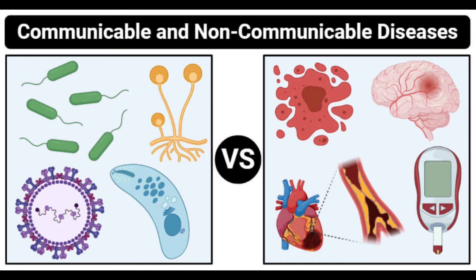HIV/Acquired Immunodeficiency Syndrome: AIDS is a chronic, potentially life-threatening condition caused by the human immunodeficiency virus, HIV. HIV is a sexually transmitted infection that weakens the immune system. If left untreated, HIV will eventually turn into AIDS within 8 to 10 years. It can spread through contact with blood, sexual contact, or from mother to child during pregnancy.